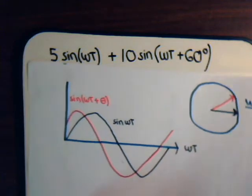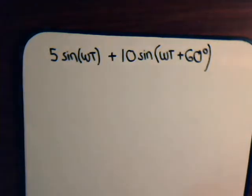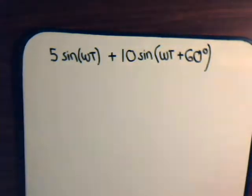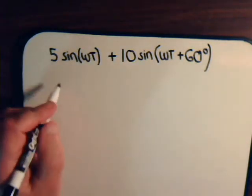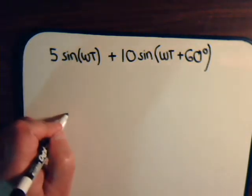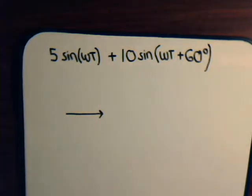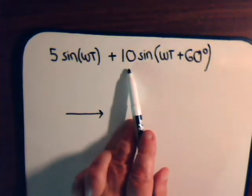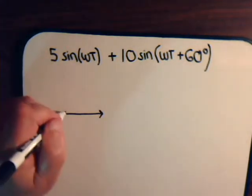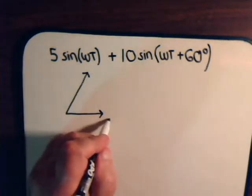Part of what the technique hinges upon is that this frequency here — omega, our angular frequency in radians per second — is the same for each one. So if we were going to represent these in phasor format, the first source has no phase angle, so it would be represented as magnitude 5 being perfectly horizontal. Then for the second representation: magnitude 10 with an angle of 60 degrees.